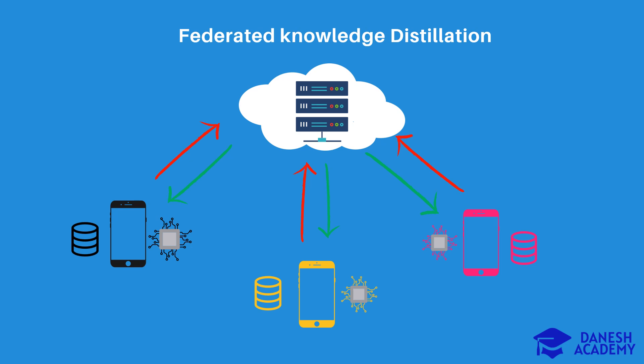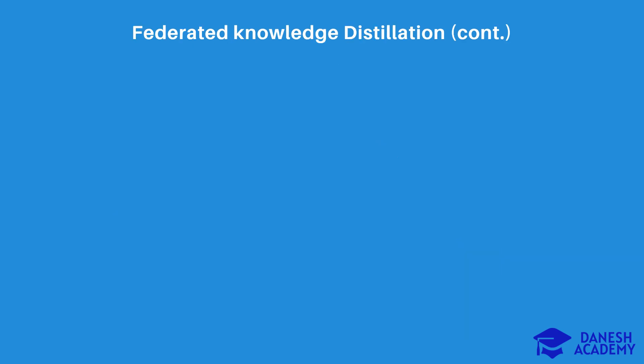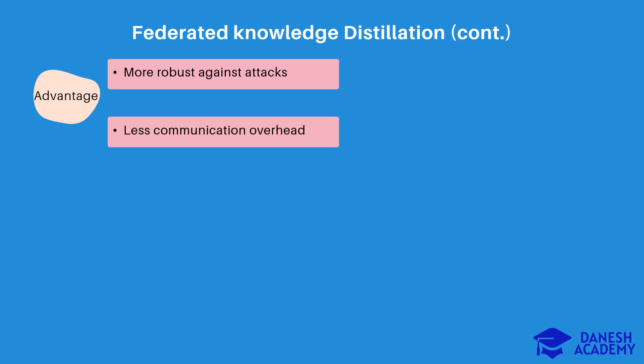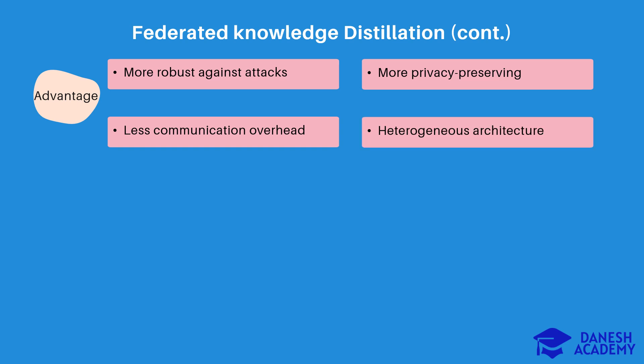To resolve some of these challenges, we can combine the knowledge distillation concept with federated learning to create a new solution called federated knowledge distillation, in which we share knowledge of clients rather than their local models. By leveraging federated knowledge distillation, our framework would be more robust against model inversion attacks, needs less communication overhead since knowledge sets are much smaller compared to local models, is more privacy-preserving since only knowledge is shared instead of model parameters, and clients can adopt heterogeneous model architectures.